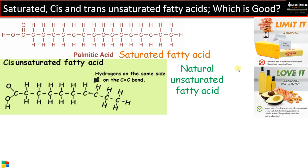Now, the difference between cis and trans unsaturated fatty acids. In a cis unsaturated fatty acid, the hydrogen atoms are on the same side of the carbon-carbon double bond — this is called cis. This is a natural unsaturated fatty acid and is good for health: it lowers cholesterol level, is good for the heart, and provides essential fats that the body needs. Cis unsaturated fatty acids are found in almonds, nuts, vegetable oils, and similar foods.